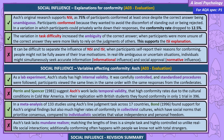Perrin and Spencer, 1981, suggest Asch's work lacks temporal validity — their high conformity rates were due to cultural conditions in Cold War America. In their replication with British students, they found conformity in only one trial out of 396. In a meta-analysis of 133 studies using Asch's line-judgment task across 17 countries, Bond, 1996, found support for Asch's original findings but also much higher rates of conformity in collectivist cultures compared to individualistic societies. Asch's task also lacks mundane realism, as matching line lengths is a simple, highly controlled task unlike real-life social interactions. Additionally, conforming often happens with people we know, not with total strangers.